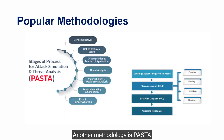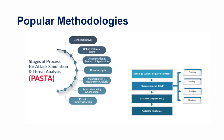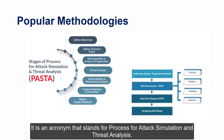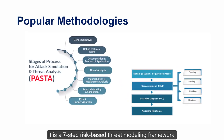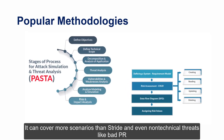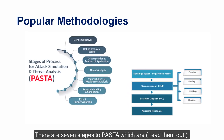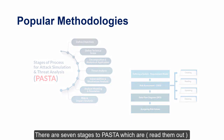Another methodology is PASTA — Process for Attack Simulation and Threat Analysis. It is a 7-step, risk-based threat modeling framework that can cover more scenarios than STRIDE, including non-technical threats like bad PR. There are 7 stages to PASTA.